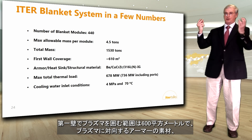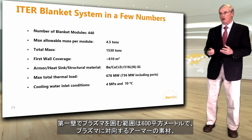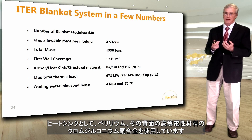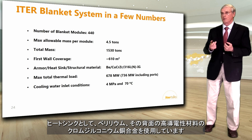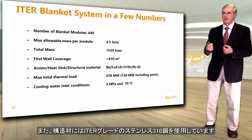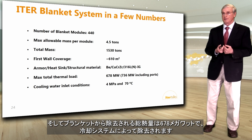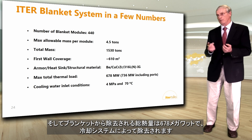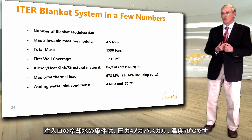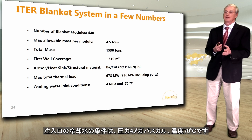The first wall coverage surrounding the plasma is approximately 600 square meters. As armor material facing the plasma we use beryllium; as heat sink just behind it we use a highly conductive copper-chromium-zirconium alloy; and as structural material we use stainless steel 316 ITER grade. The maximum total thermal load to be removed from the blanket is 678 megawatts; including the ports this goes up to 736 megawatts. Cooling water conditions at the inlet are 4 megapascals of pressure and 70°C temperature.